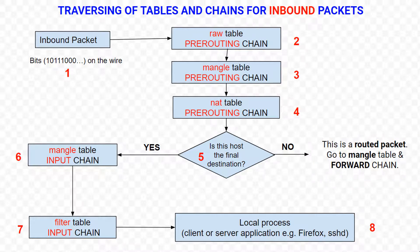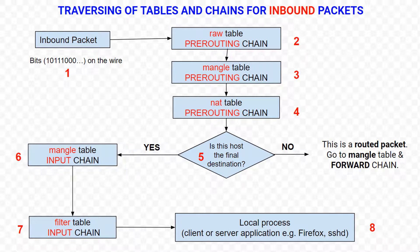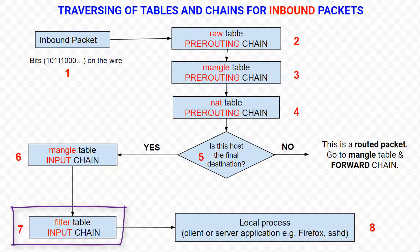But if this host is the final destination, the packet starts traversing the mangle table of the input chain. Here we can change values from the packet headers if we haven't already done that on the mangle table of the pre-routing chain. After this step, the packet starts traversing a very important table and chain, which is the filter table of the input chain.